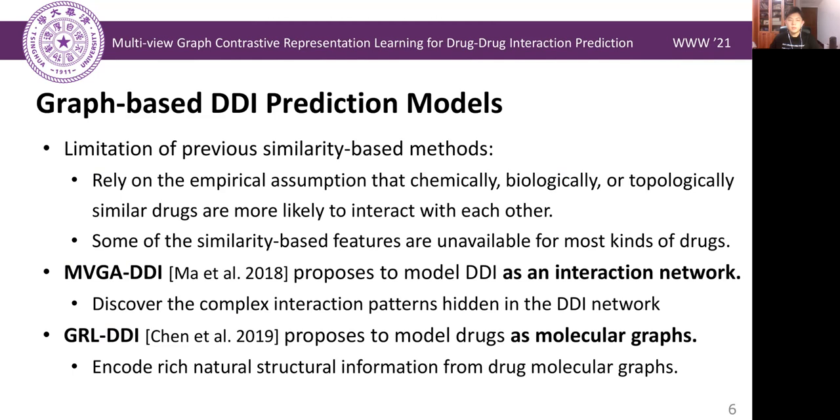Previous similarity-based methods have some limitations. On one hand, they mainly rely on the empirical assumption that chemically, biologically, or topologically similar drugs are more likely to interact with each other. But this assumption is not always justified. On the other hand, this method also needs many similarity-based features. However, some of the features are unavailable for most kinds of drugs.